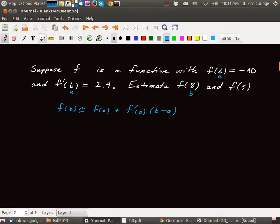So now let's plug these things in. It says that f of 8 is approximately f of 6 plus f prime of 6 times 8 minus 6. Okay, so b is 8, a is 6.